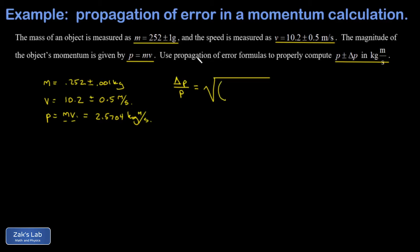We have delta p over p is equal to the square root of delta m over m, the relative uncertainty in the mass squared, and then in our second term we have the relative uncertainty in the speed squared.